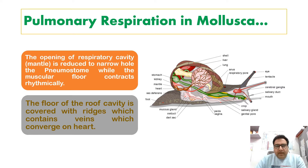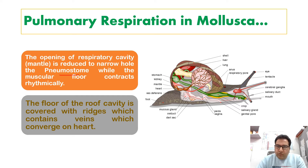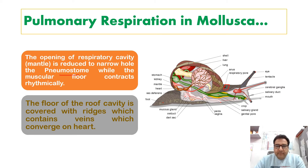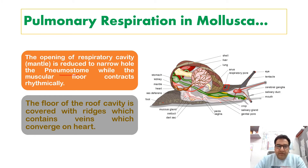The opening of the respiratory cavity — that is, the mantle — is reduced to a narrow tube called the pneumostome, while the muscular floor contracts rhythmically. This pneumostome, also called the respiratory pore, allows air to enter and leave due to the rhythmic contraction of muscles. The floor of the roof cavity is covered with ridges which contain veins that converge on the heart.